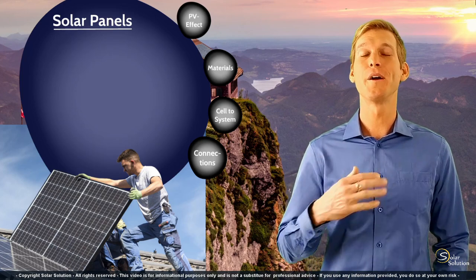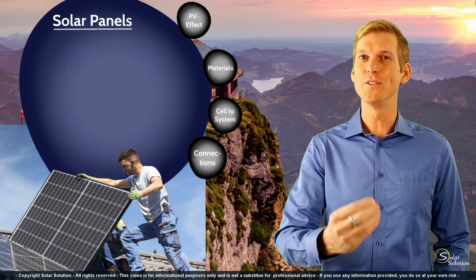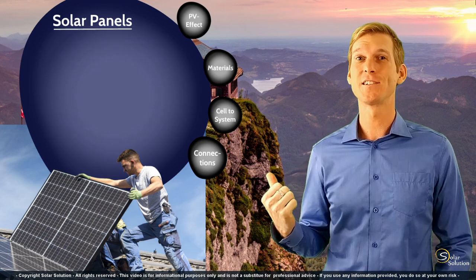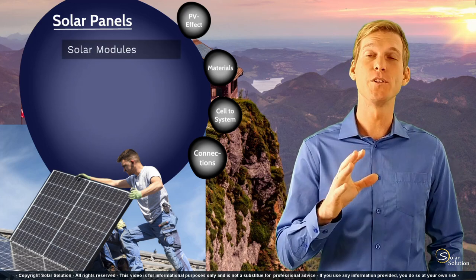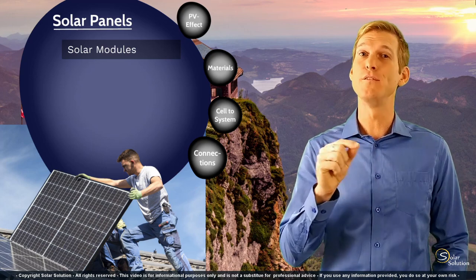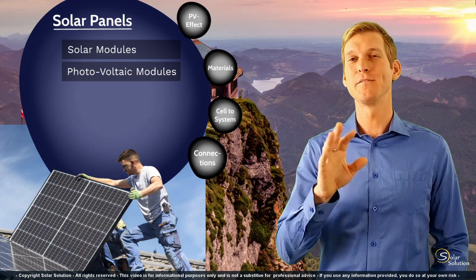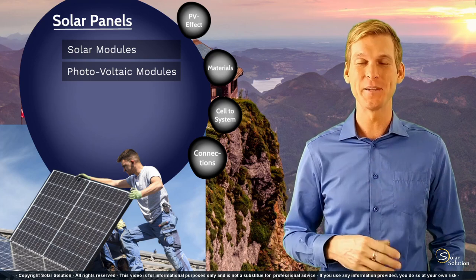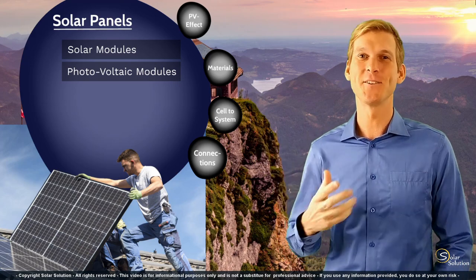To start off, almost everybody — including myself — almost always uses the wrong terminology for describing solar panels, because these units are actually not called solar panels but solar modules. Another term used interchangeably with solar modules is PV modules, or photovoltaic modules. I don't care too much which word you use, but I want to make sure you know the proper term — though throughout this content I will continue to refer to them as solar panels.